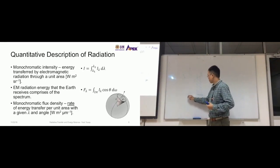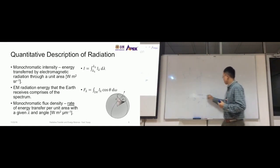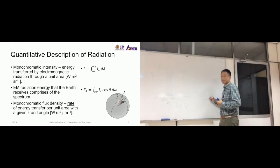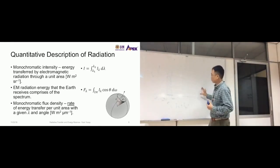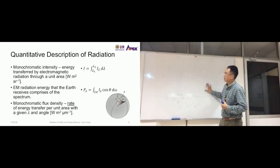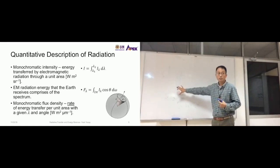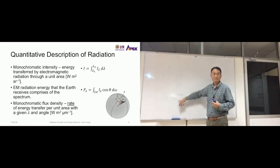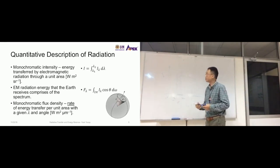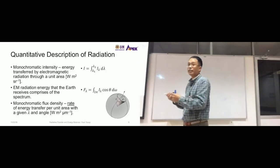If you want to calculate the intensity I for the entire spectrum, you just go from the lowest value — say 0.01 — up to maybe 10 cm. That allows you to calculate the intensity of radiation for the entire spectrum. For a certain color, it's just between a range of lambda values.